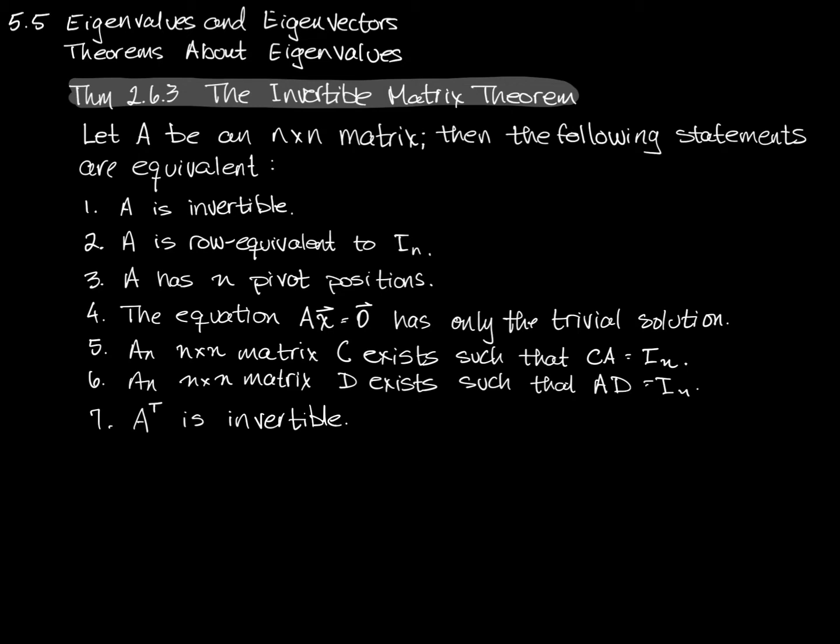A has n pivot positions — that means you can put it into echelon form, reduced echelon form. The equation Ax equals zero has only the trivial solution. n by n matrices C and D exist such that you can multiply A from either side by some matrix and get the identity matrix. That's statements five and six. And number seven, A transpose — the transpose matrix — is also invertible.